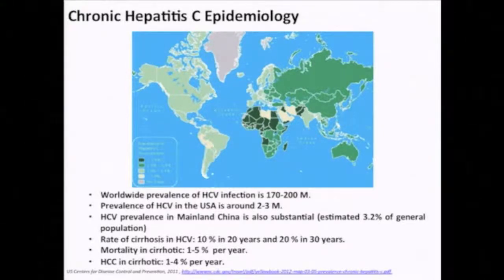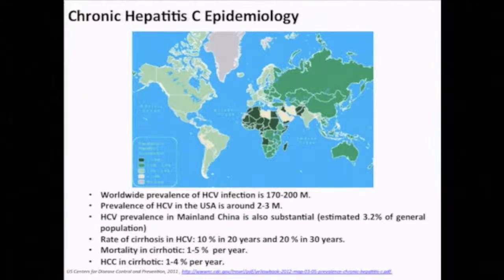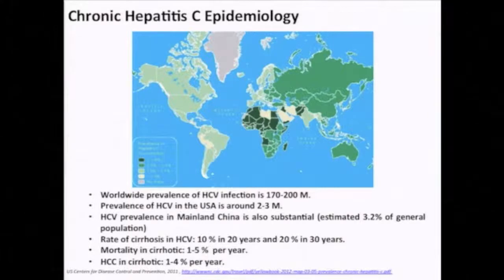The numbers are quite remarkable: 5% of people who have cirrhosis will ultimately die per year, and 4% of them will develop cancer. The benefits to society of preventing cirrhosis are enormous.